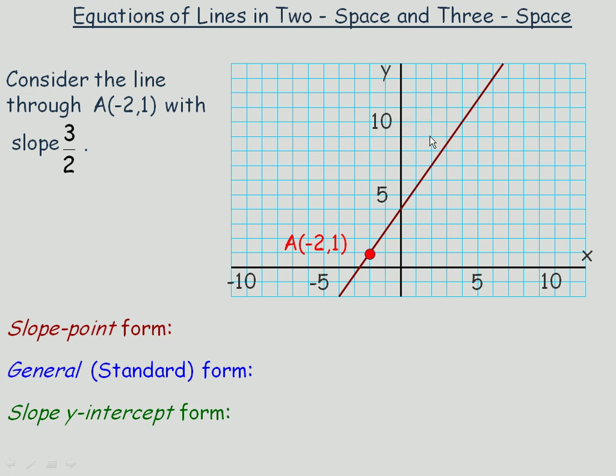In this first example, we're going to talk about equations of lines that you've previously seen, perhaps in grades 9, 10, or 11. We're going to start with a line that goes through the point (-2, 1) and has a slope of 3/2.